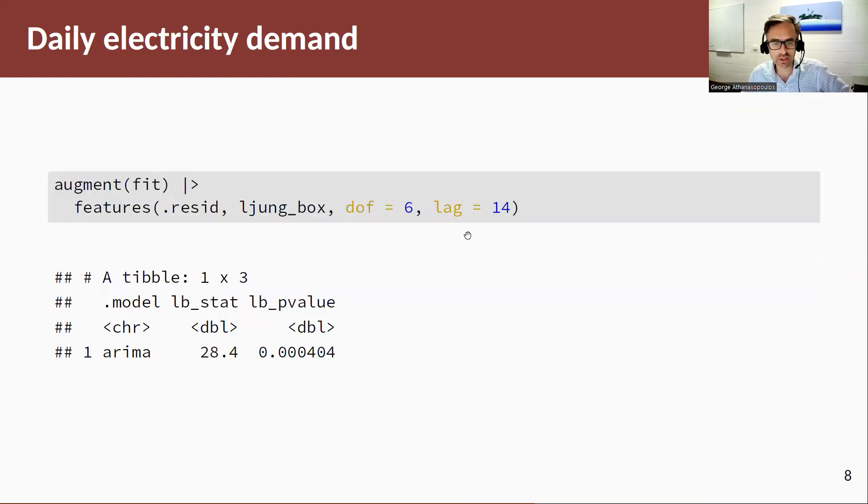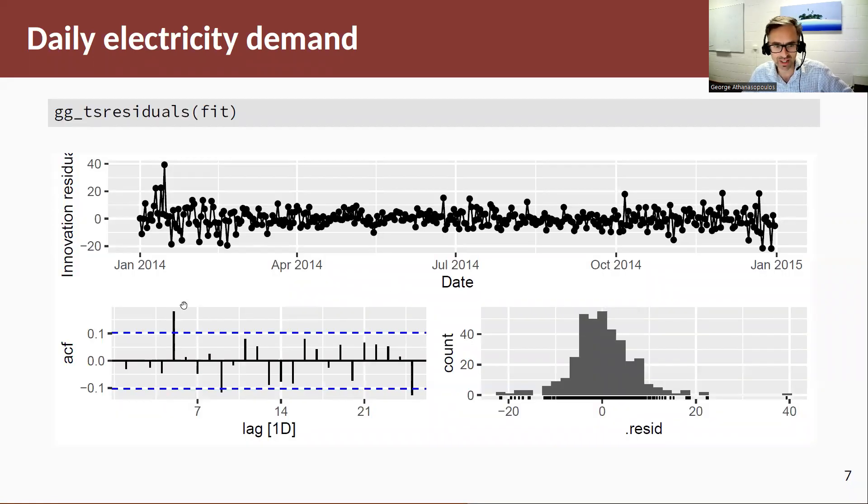If I do a Ljung-Box test on this, obviously I reject the null of white noise and I could do that. I think I could do that by looking at these significant spikes.